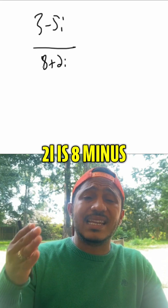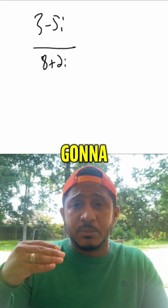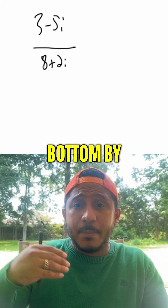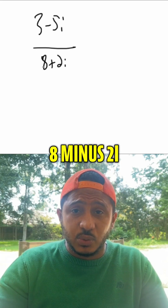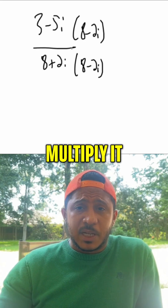The conjugate of 8 plus 2i is 8 minus 2i. So we're going to multiply top and bottom by 8 minus 2i. We're just multiplying it out.